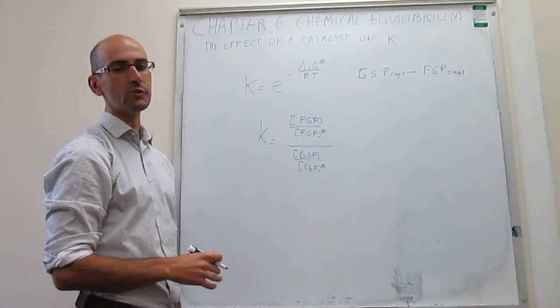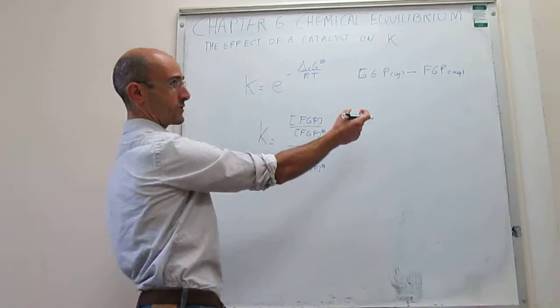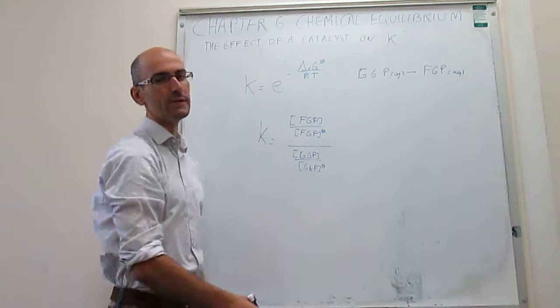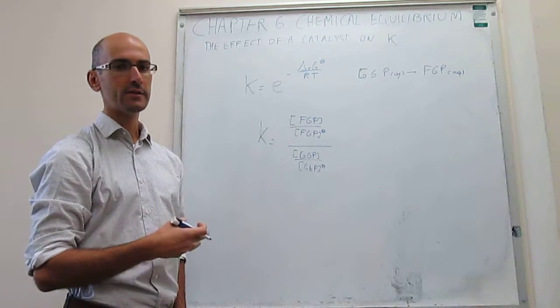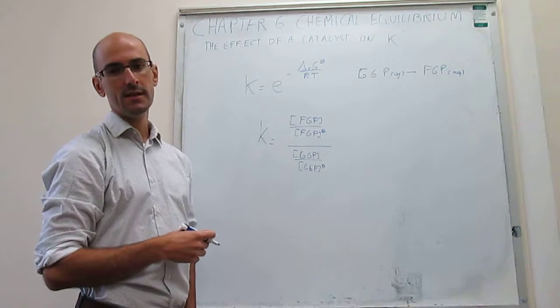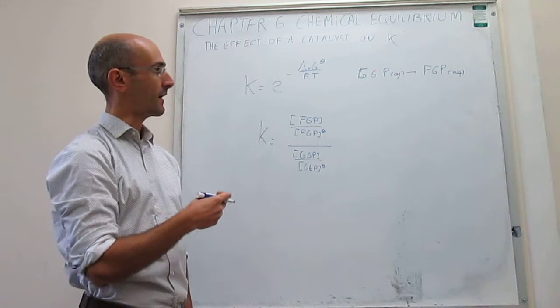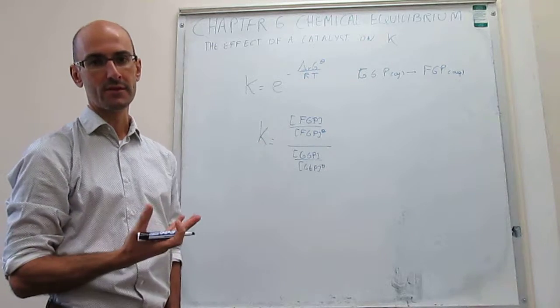Now the question is what happens to this when you add a catalyst? This reaction can occur without a catalyst, but it would be very slow. This is an isomerization in our cells during glycolysis that is actually catalyzed by an isomerase, which makes the reaction much faster.